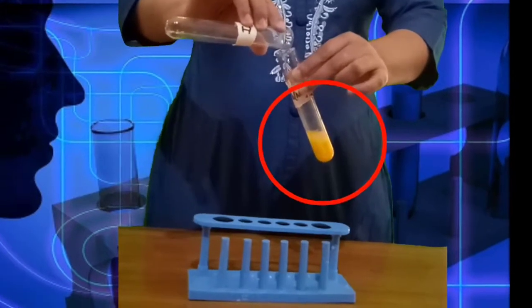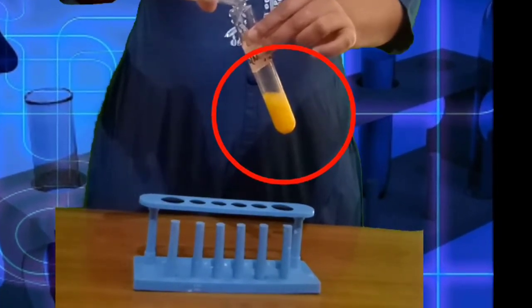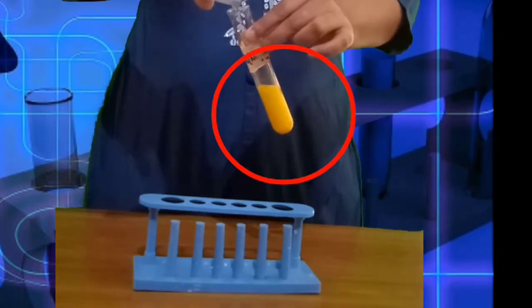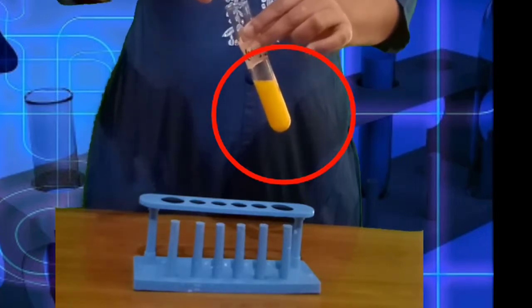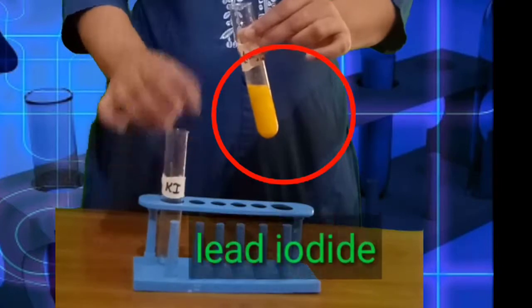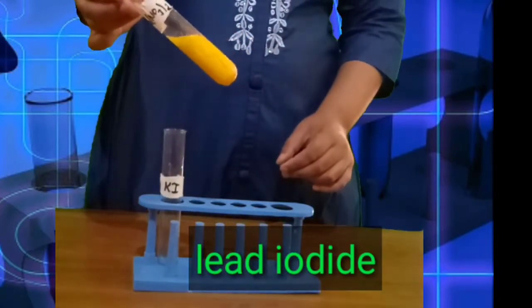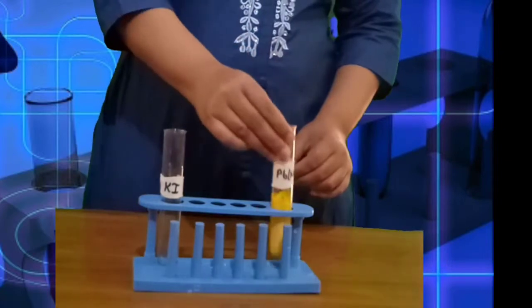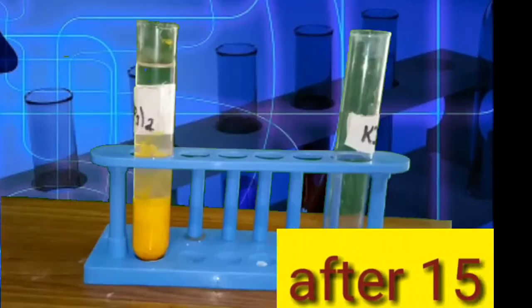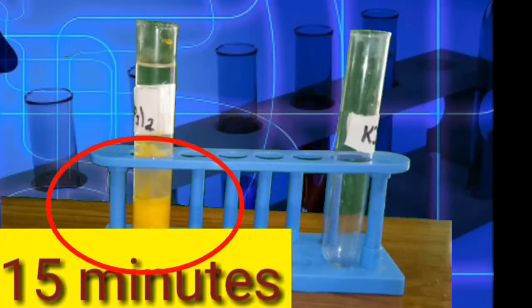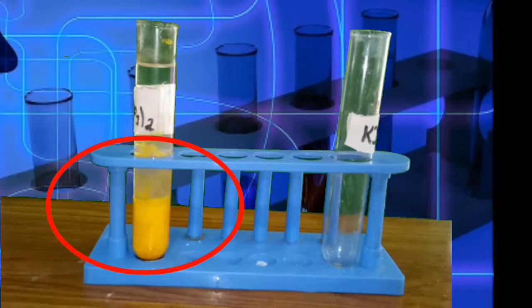You will observe that dark yellow color will appear here, and this yellow compound is lead iodide. Put the test tube for 15 minutes, and after 15 minutes you will see that yellow compound gets settled down and these are precipitate, that is an insoluble compound.